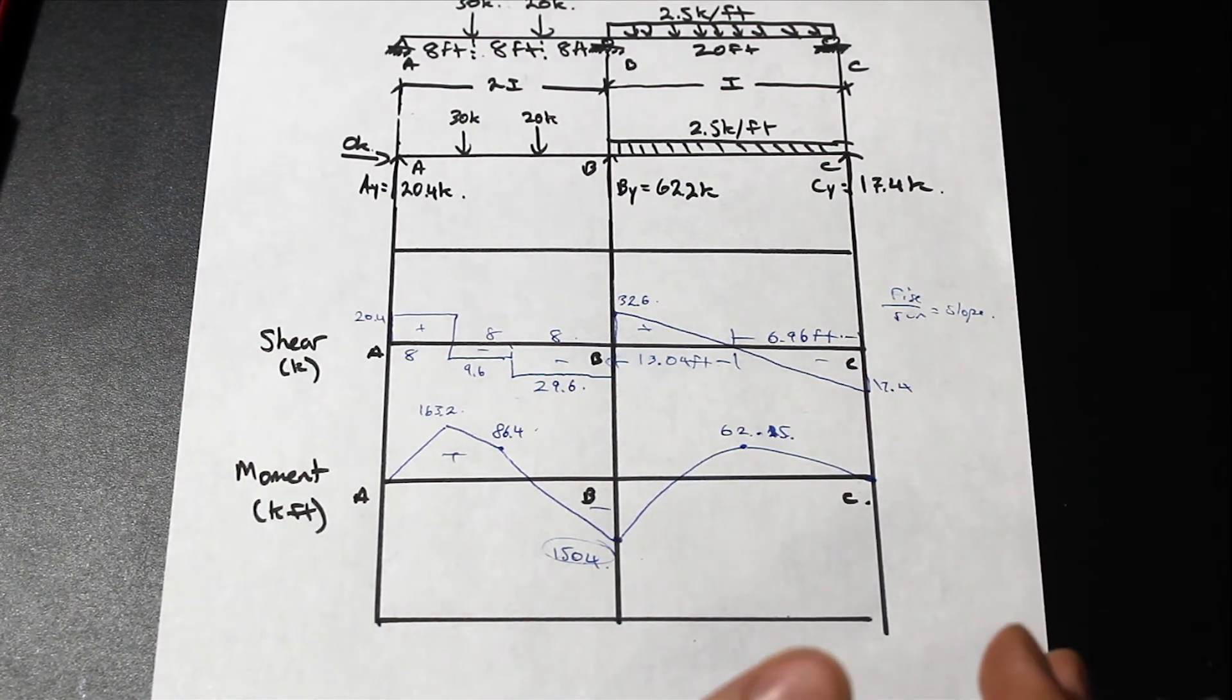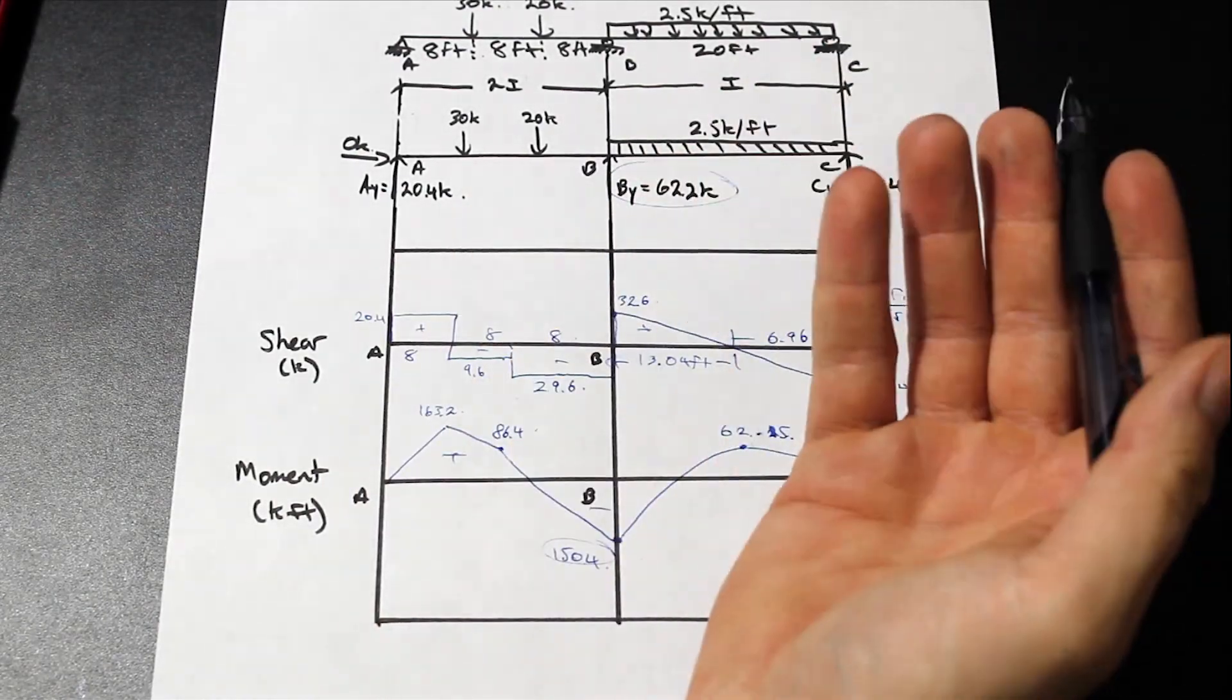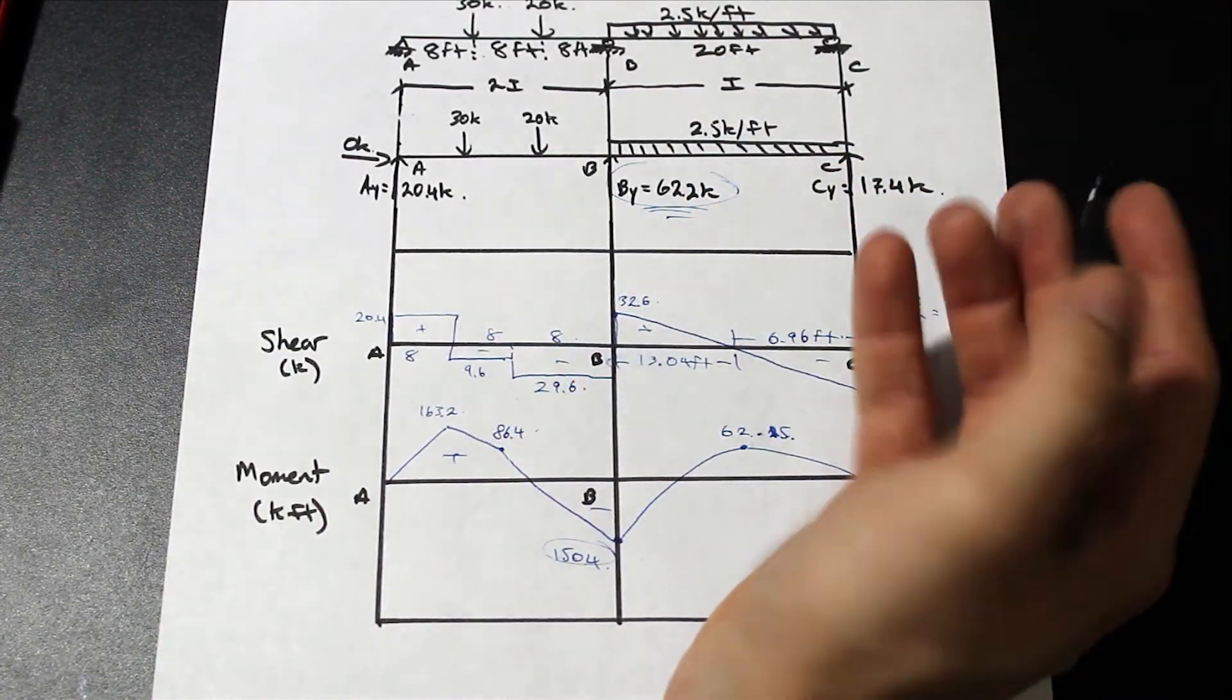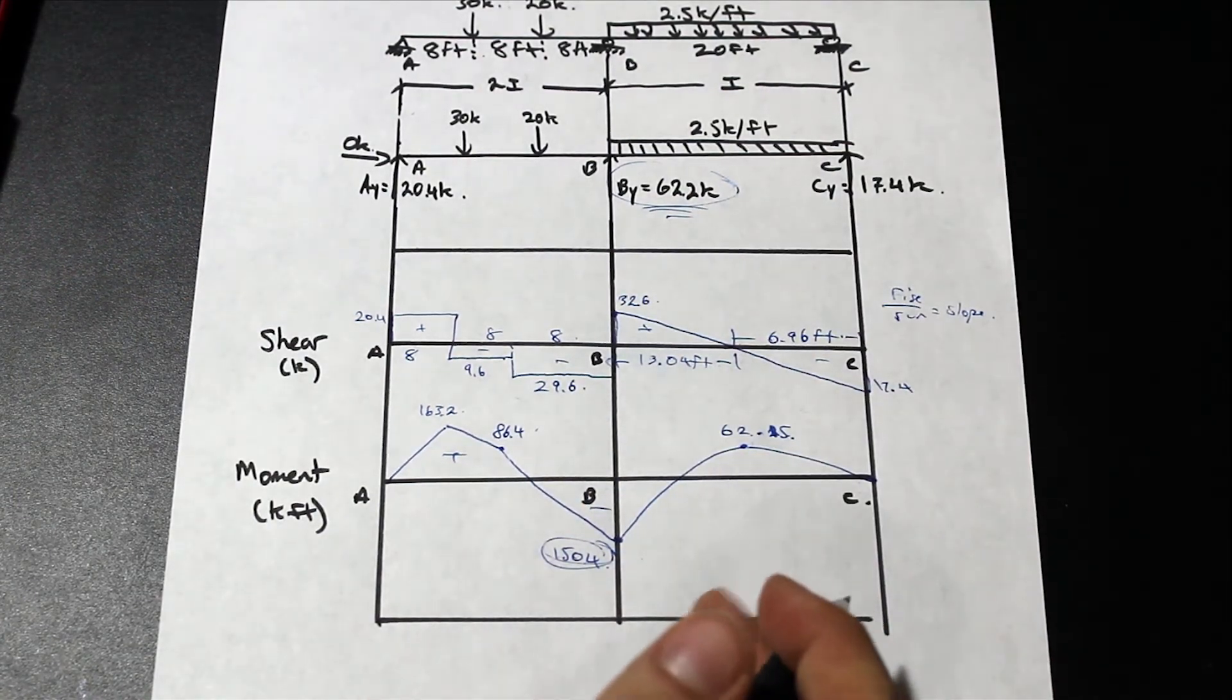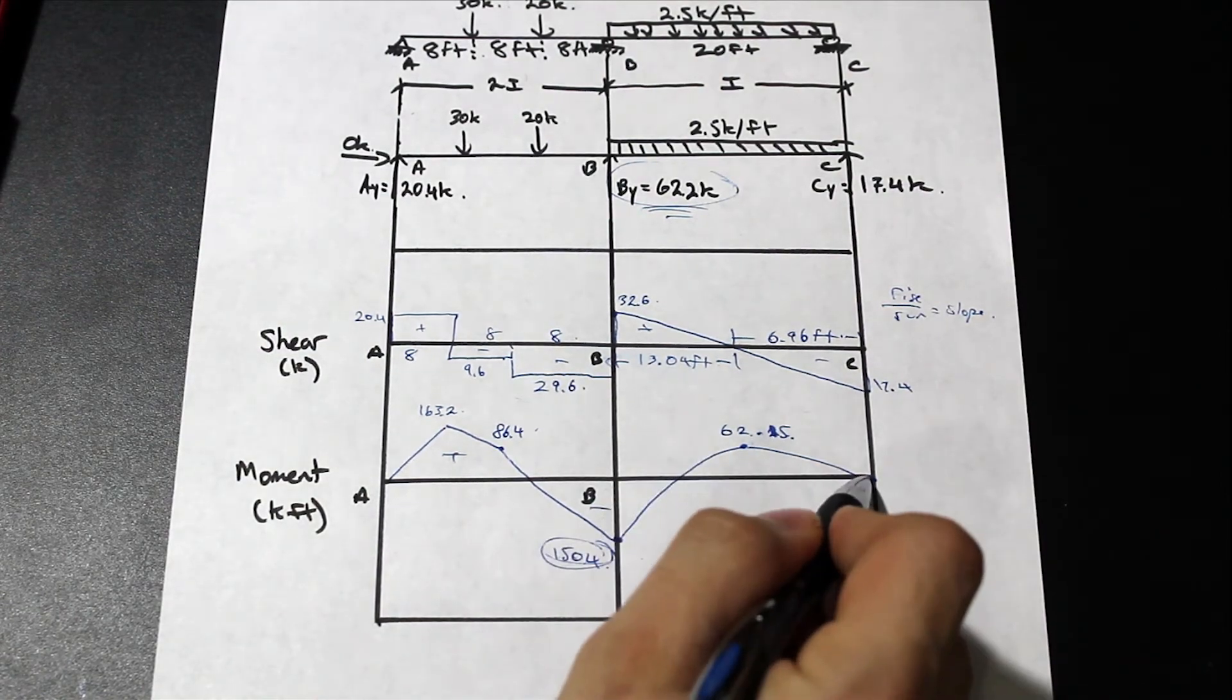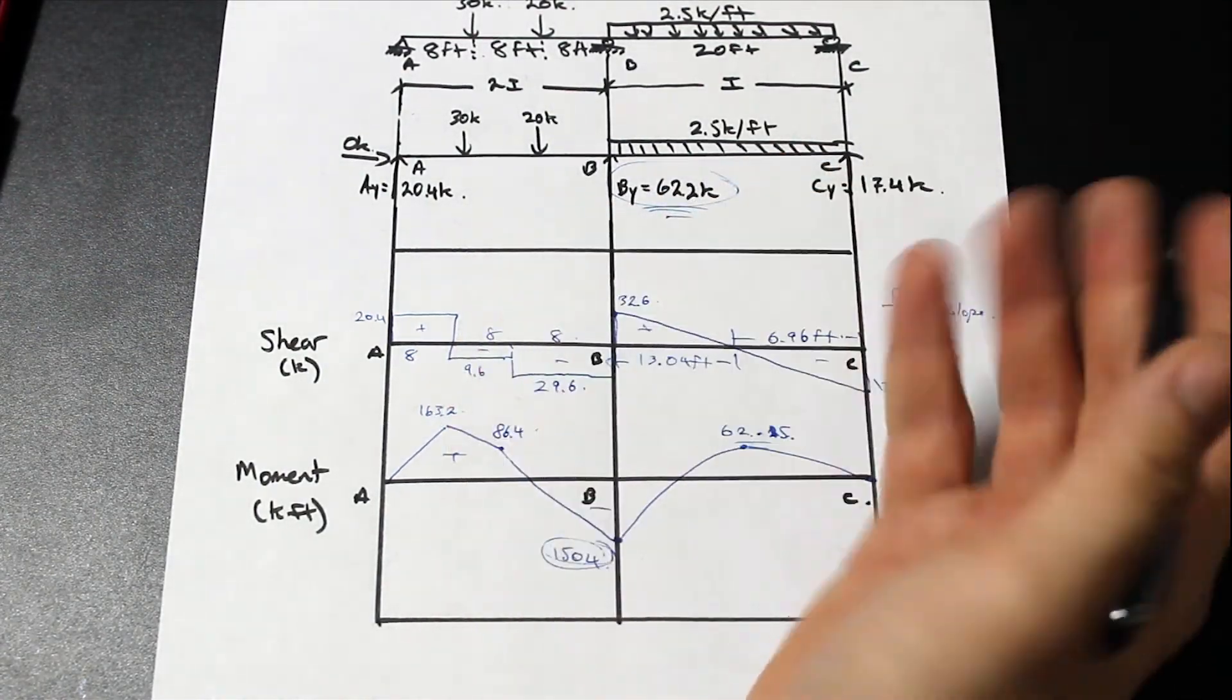So you'll notice that this is slightly different than the value that we got from the three-moment equation method. And the reason for that is that when we calculated By, for example, we had more decimal places and we actually rounded them to one decimal place and then came up with 62.2, for example. And that's going to give us a slightly different number. We got 151.5, I believe, from the other question, and in this, as you can see, we got 150.4. So this is off by about a kip at the end.